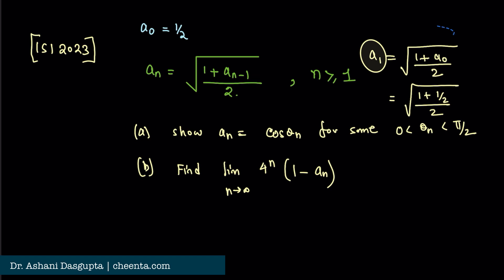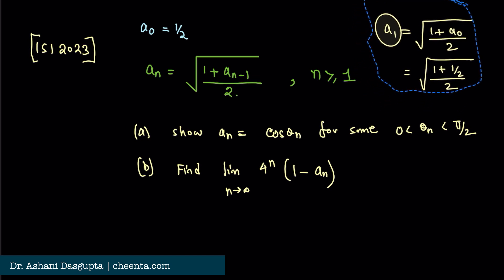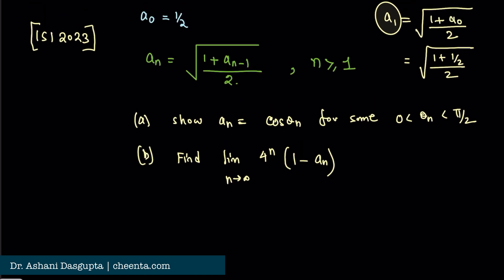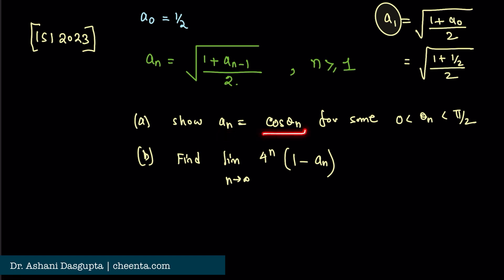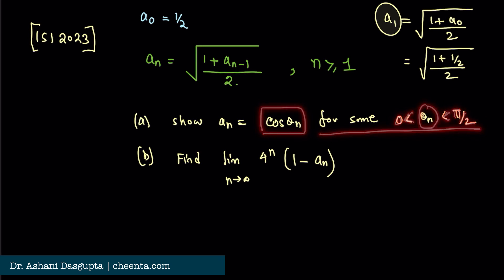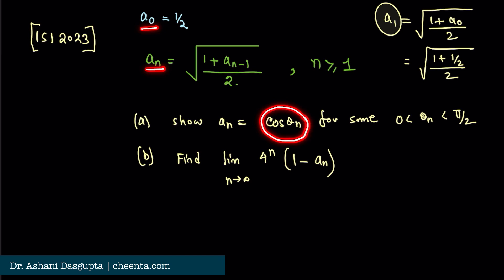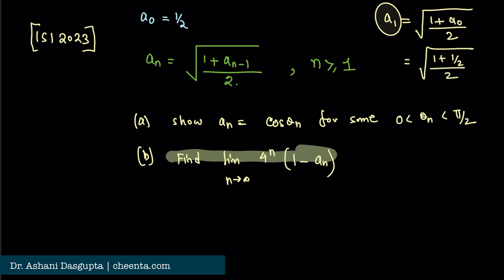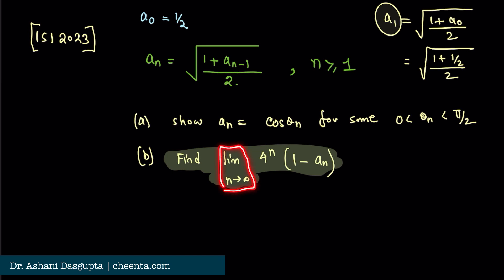There are two parts to this question. The first part is really the clue for the second part. The first part says: show that a_n = cos(θ_n) for some angle θ_n strictly between 0 and π/2. Each term of the sequence can be regarded as the cosine of some angle in that interval. In the second part, we have to evaluate the limit: limit as n tends to infinity of 4^n times (1 - a_n).